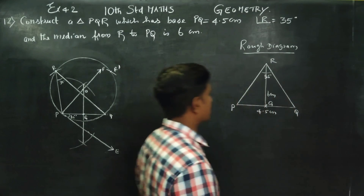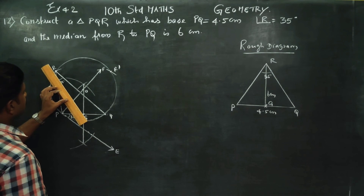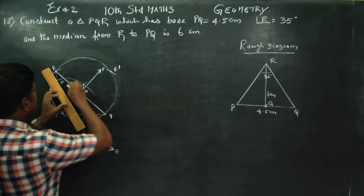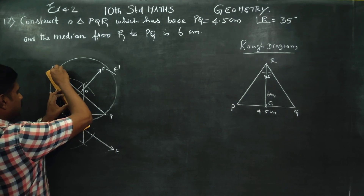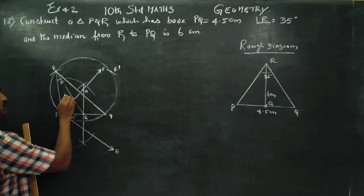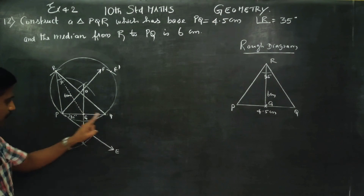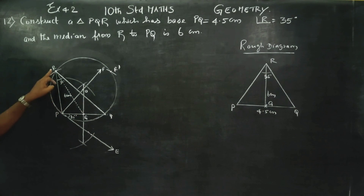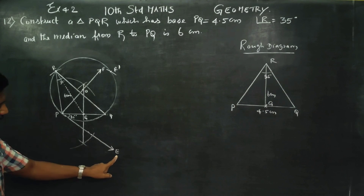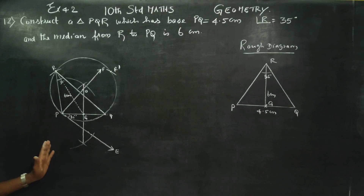If you want to join R to G, this is the median. The median measurement is 6 cm. Join it with dotted lines — the dotted line measurement is 6 cm. Label the points: PQR is the main triangle, RG is the median, O is the centre point, this is E, F, and R. One side of the triangle is correct.